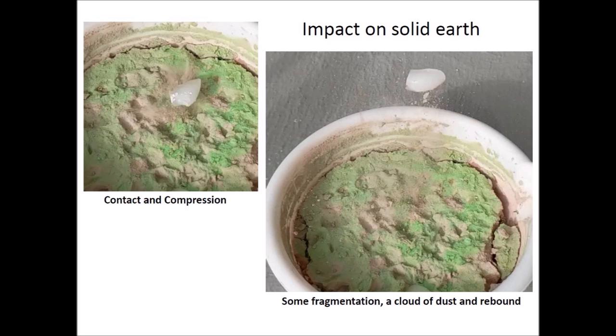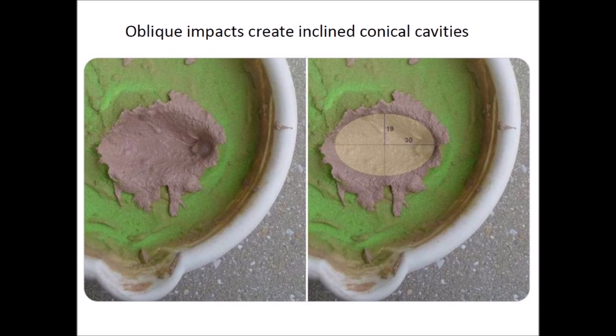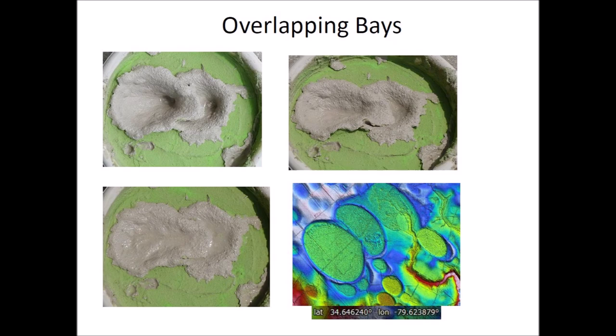Oblique impacts create inclined conical cavities, which when viewed from above have elliptical geometry — this makes sense because ellipses are conic sections. The projectile stops toward the leading edge of the ellipse and the overturned flanges become raised rims around the cavity. Vibrations from adjacent impacts promote viscous relaxation that reduces the depth of the inclined conical cavities to create shallow elliptical bays. This image shows the transformation of adjacent conical impact craters into overlapping bays through viscous relaxation, with the lower right image showing Carolina Bays with different types of overlaps.